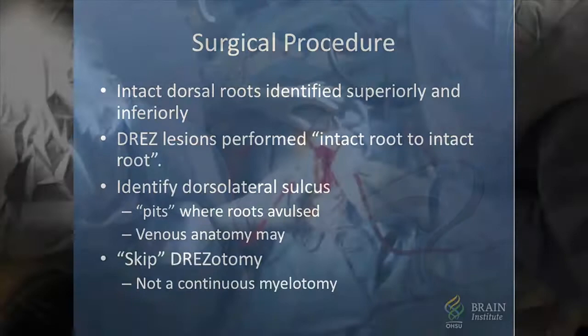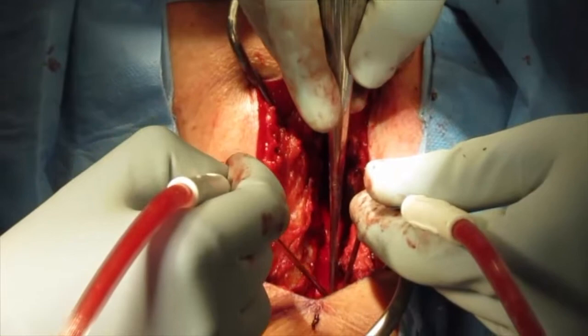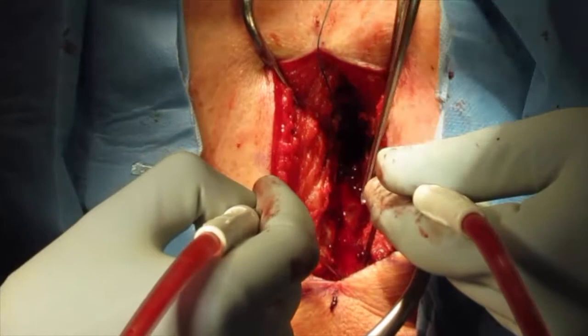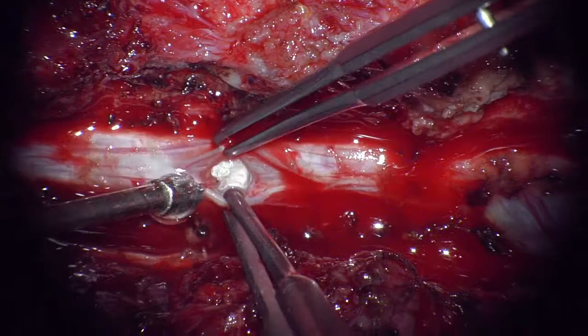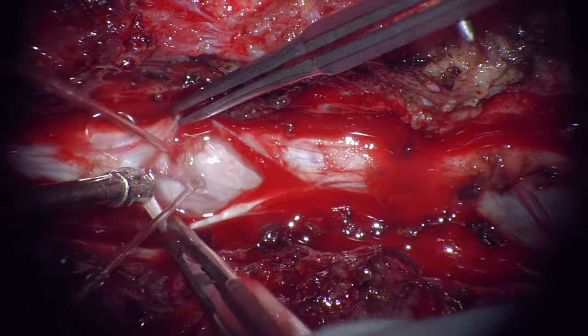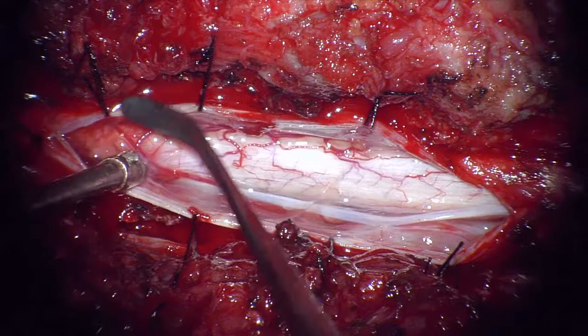The initial surgical approach for DRES lesioning is straightforward. Once the spinous processes have been identified, the procedure is then conducted unilaterally, sparing the spinous processes and interspinous ligament. A laminectomy is performed from C3 to T1. Under the microscope, a paramedian durotomy is performed and the dura is tacked up to afford exposure of the dorsolateral spinal cord over the affected levels. Once the spinal cord is exposed, it should become obvious where the nerve root avulsions have occurred, as well as the superior and inferior most intact dorsal rootlets.